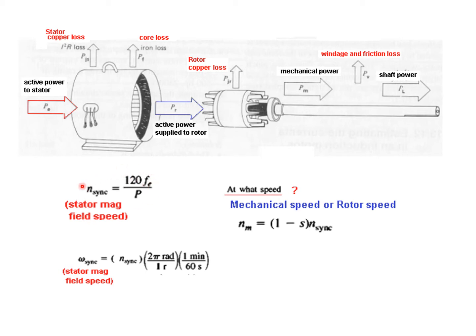We also convert this into radians per second instead of RPM by using this formula. So it is omega_sync equals n_sync times 2π radians divided by 60 seconds. This will give the angular speed. Now when the question asks at what speed, that means it is asking the rotor speed or the mechanical speed. Mechanical speed n_m is given by (1 - s) multiplied by synchronous speed.